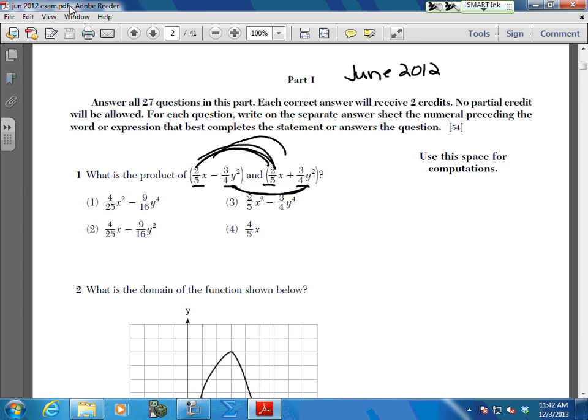When you multiply your fractions, multiply the numerators, multiply the denominators, and x times x is x squared. Your positive times your negative gives you a negative. Again, for your fraction, multiply your numerators times your denominators. And y squared times y squared, y to the fourth. So you come up with choice 1.